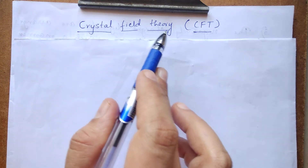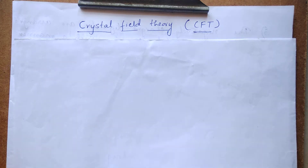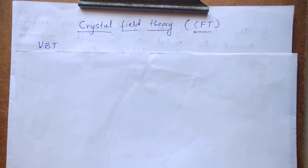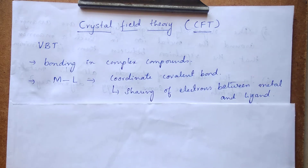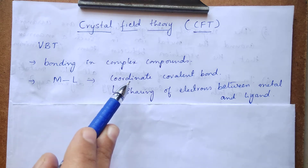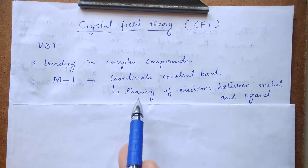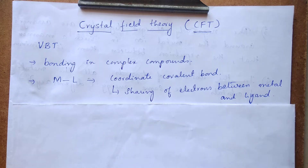Today we are covering crystal field theory, or CFT, which gives good information about bonding in coordination complexes. In our last video we studied valence bond theory, which was also proposed to explain bonding in coordination complexes. According to VBT, the bond between metal and ligand was a coordinate bond — a type of covalent bond involving sharing of electrons. But valence bond theory had its own drawbacks, and to overcome them, crystal field theory was proposed.